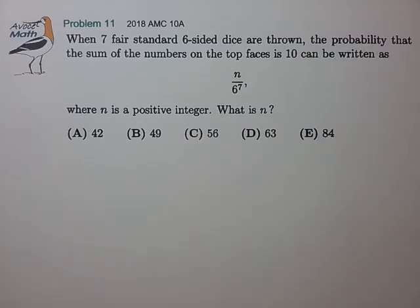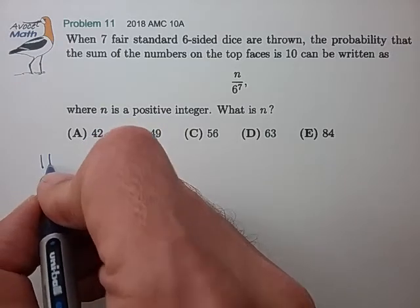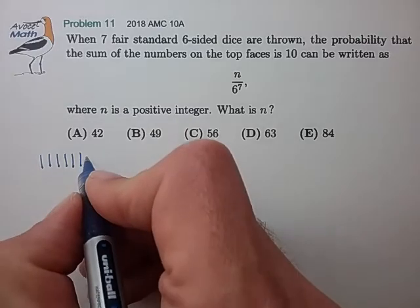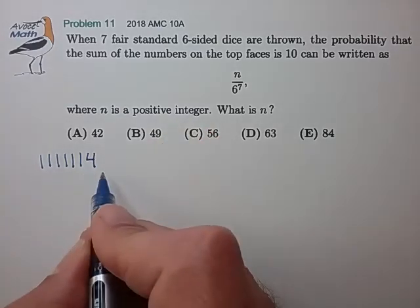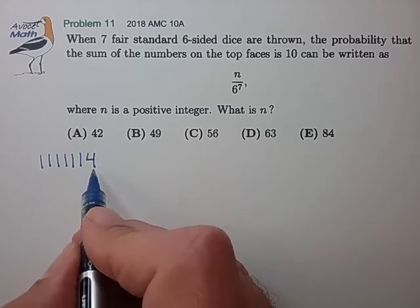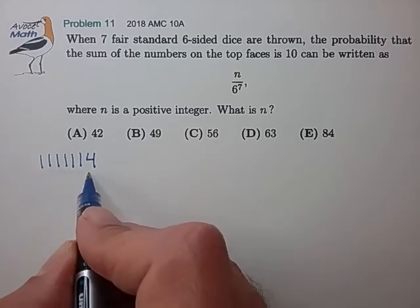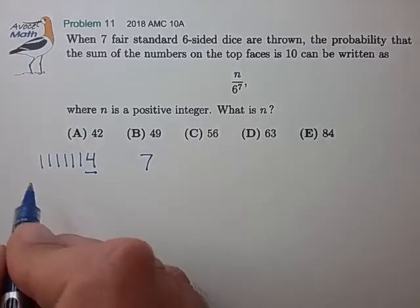So the simplest example that I can come up with is to throw 6 of the dice to a value of 1, and 1 of the die to the value of 4. So that adds up to 10, but there's seven different ways that we could select the die to receive the value of 4. So there's seven possible arrangements for this configuration.